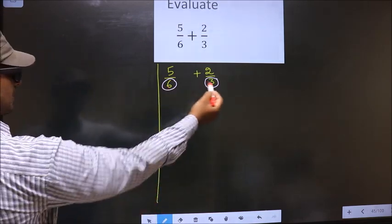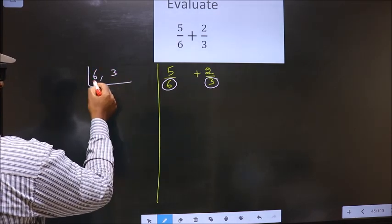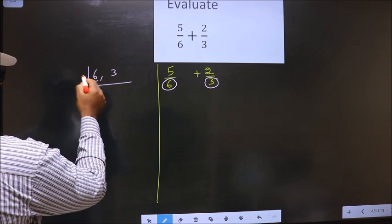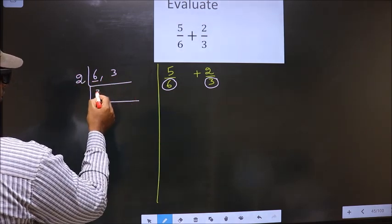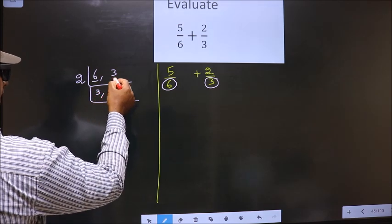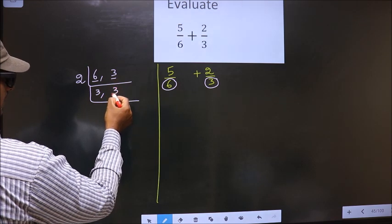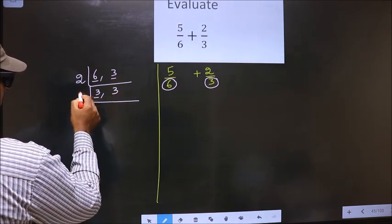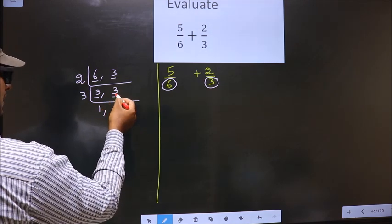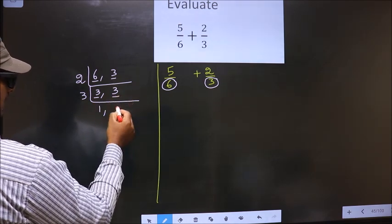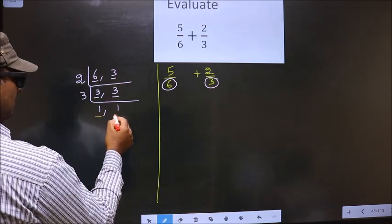So the LCM of 6 and 3. The first number is 6 which is even so we take 2 here. When do we get 6 in 2 table? 2, 3 is 6. The other number is 3. 3 not divisible by 2 so you write down as it is. Now here we have 3. 3 is a prime number so 3 once 3. The other number is 3. When do we get 3 in 3 table? 3 once 3. Now we got 1 in both the places.